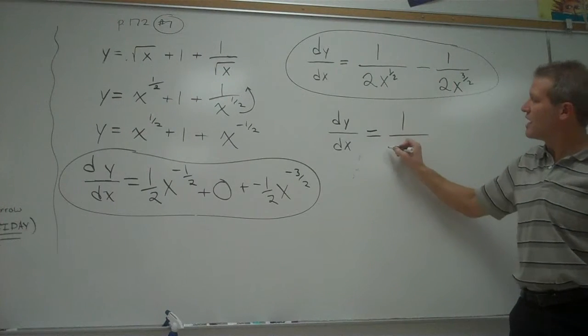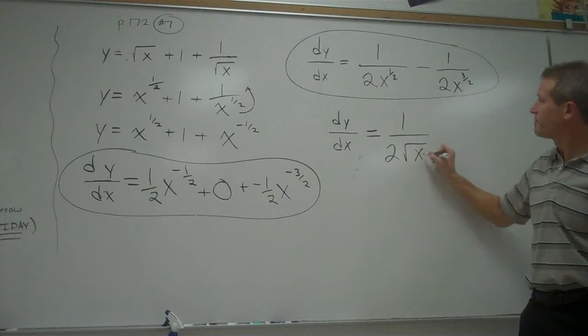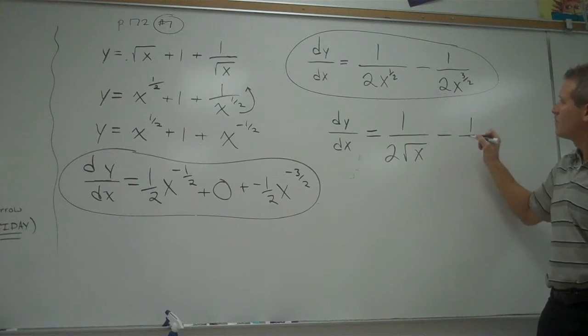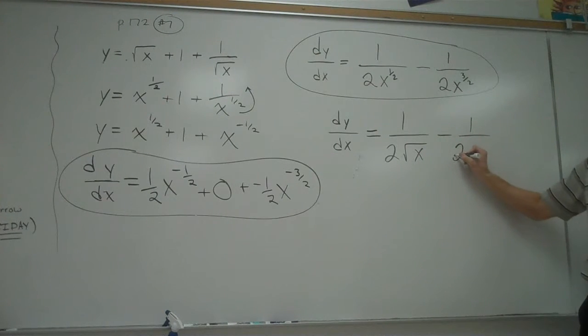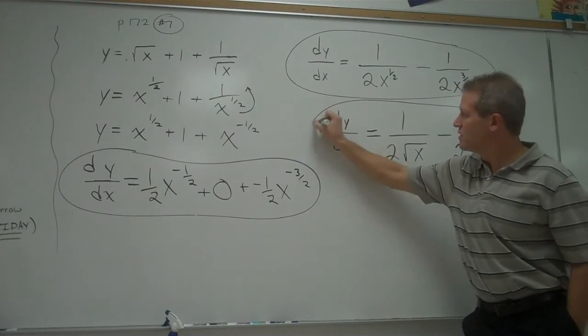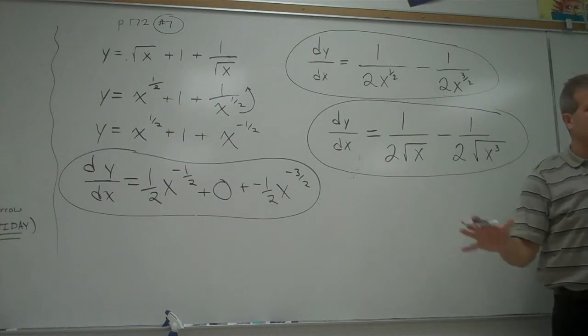The other thing you could do is x to the half is the same as the square root of x. And x to the three halves. The power's on the top, the root's on the bottom. Just like roots are on the bottom of the tree, right? So this two on the bottom means square root. This three here means x cubed. So it'd be the square root of x cubed. So really, any of those three are correct.